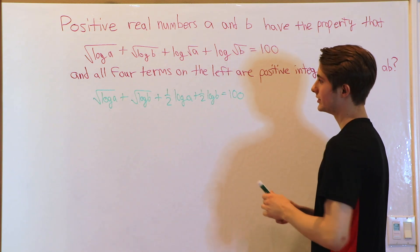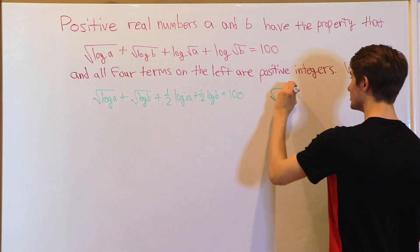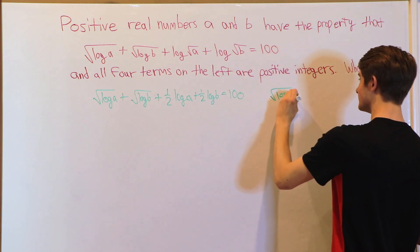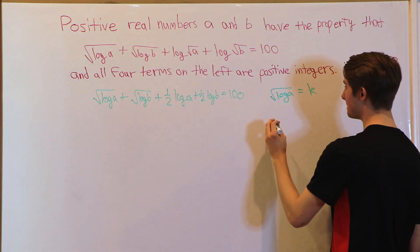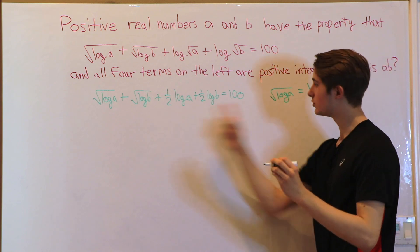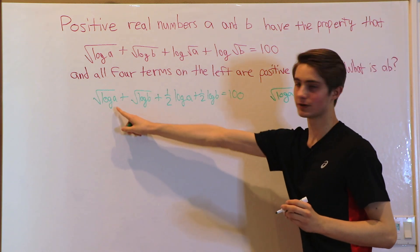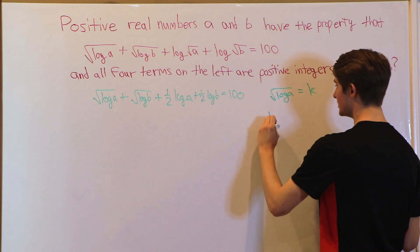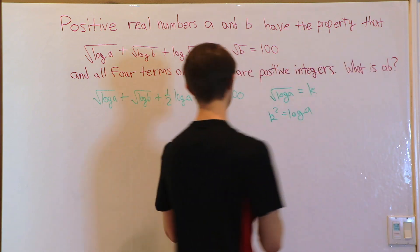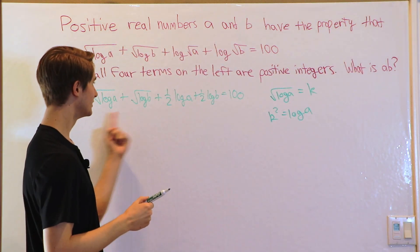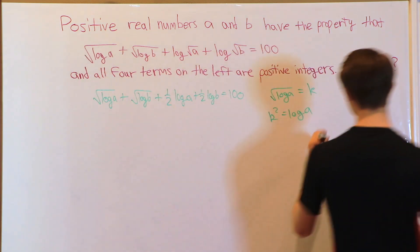But what we do know is that these are both positive integers. So, for example, square root log A equals K, where K is some positive integer. What if we took this whole equation in terms of K instead of A? That would get rid of all these square roots and logs. That would mean K squared is log A. That means we can substitute this in. This is K. This is K squared. Then we can get rid of all the logs, all the square roots. And we can do the same thing with B, too.